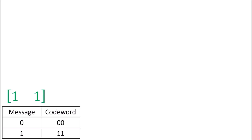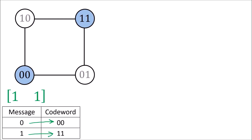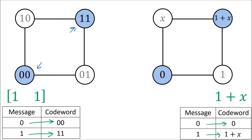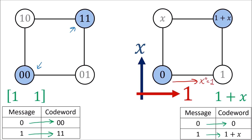This very simple generator matrix transforms the 1-bit messages 0 and 1 into the valid codewords 00 and 11. Visually, the 2-bit code space would look like this, where the valid codewords are colored in blue. This is very similar to using the generator polynomial 1 plus x to turn the 1-bit messages 0 and 1 into the valid codewords 0 and 1 plus x. The 2-D codeword space looks very similar, except we think of one direction as being associated with x to the power 0 and the other with x to the power 1.